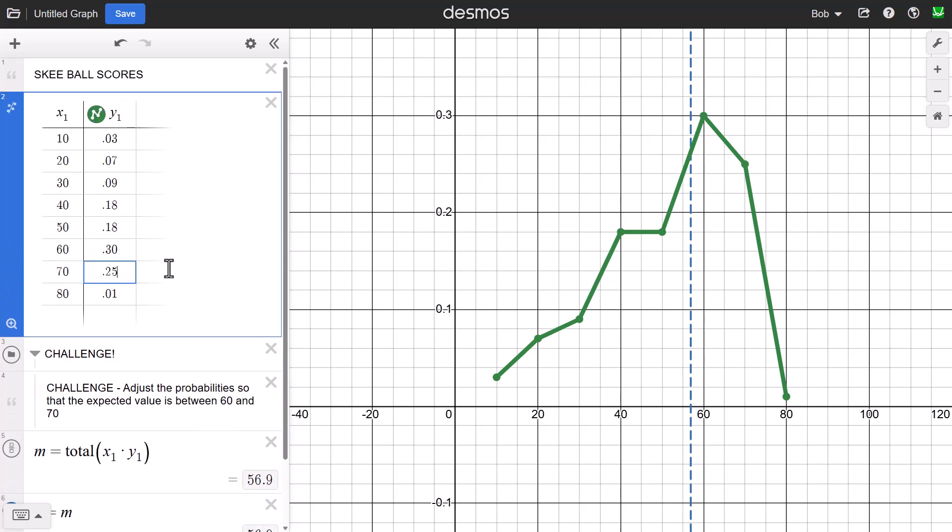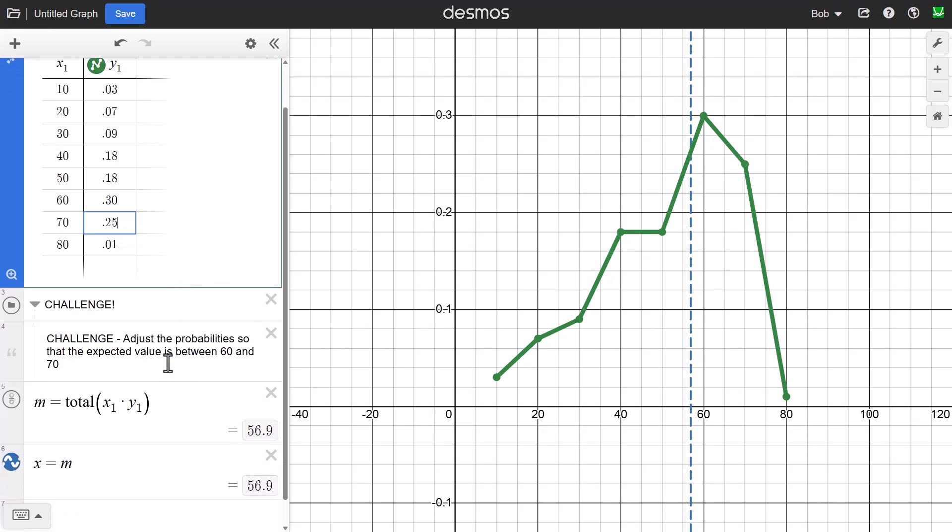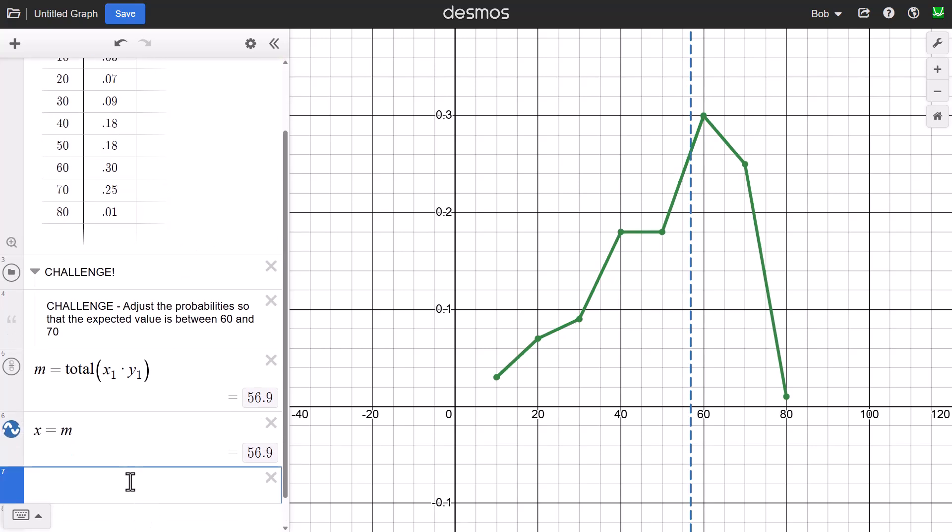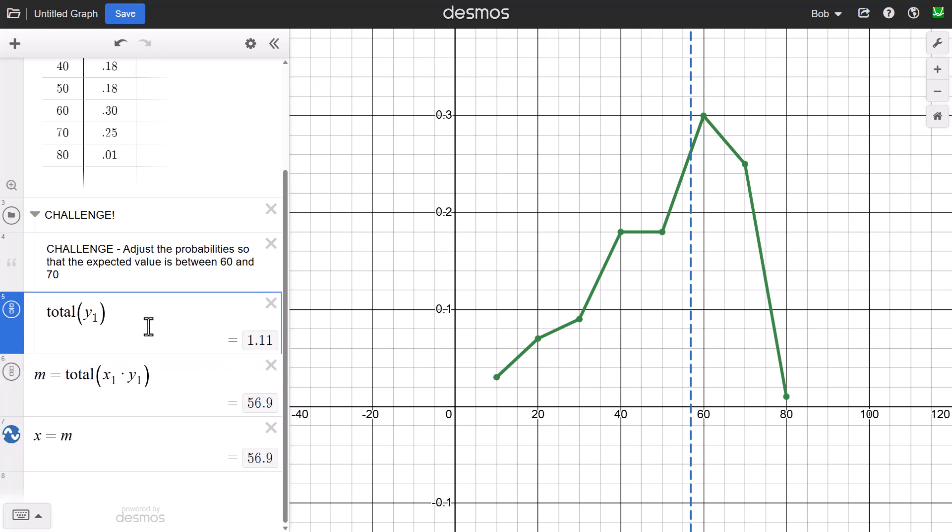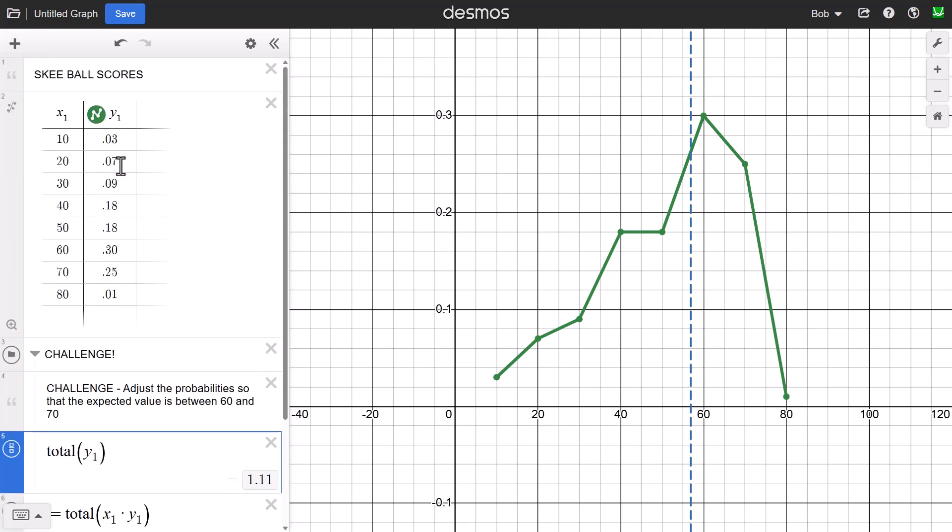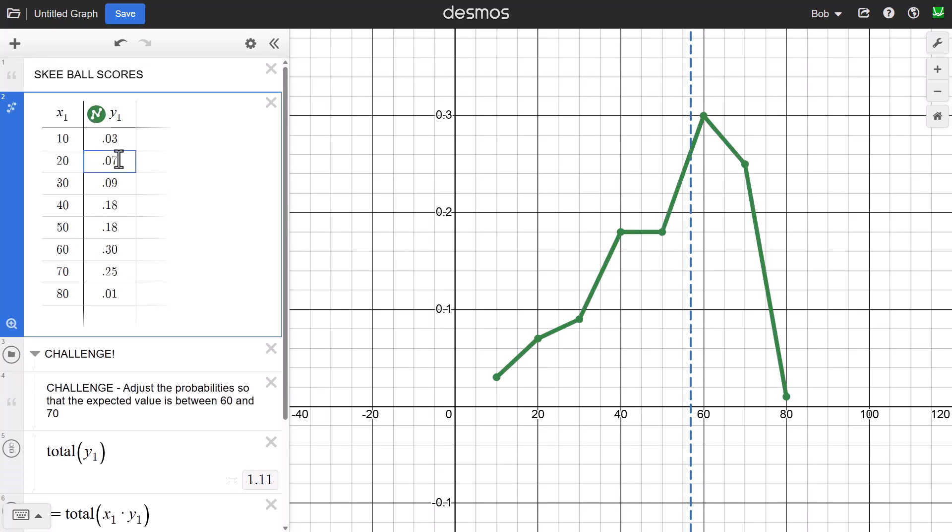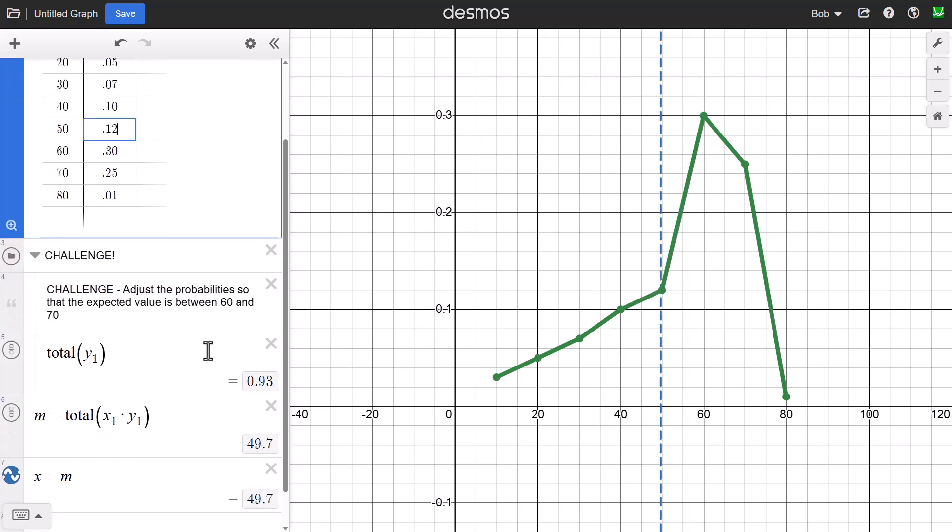So how can I verify that? Well, I probably need to keep track of the total of the Y1s, which is right now 1.11. So we're going to play with this tricky balance. In fact, I'm going to move that up so I can play around with that. Let's see if we can get this to happen now. So we're going to lower some of these other probabilities, maybe 0.05 and 0.07, and make this a 0.10 maybe, and make this a little bit lower. So I'm at 0.93 right now. My mean is 49.7.